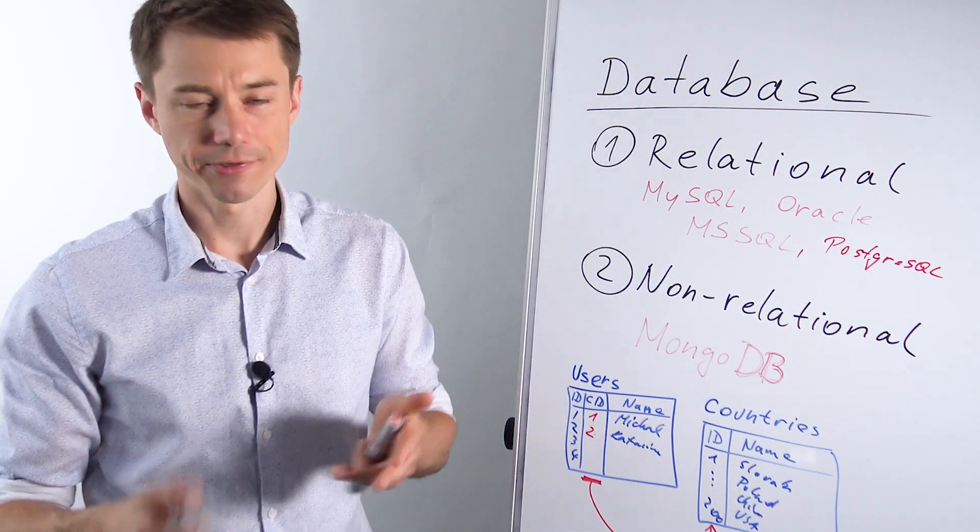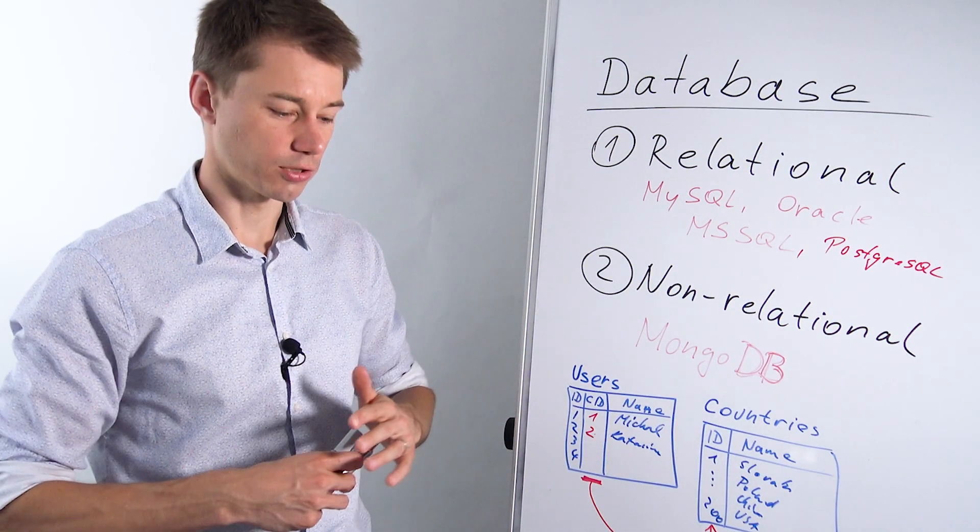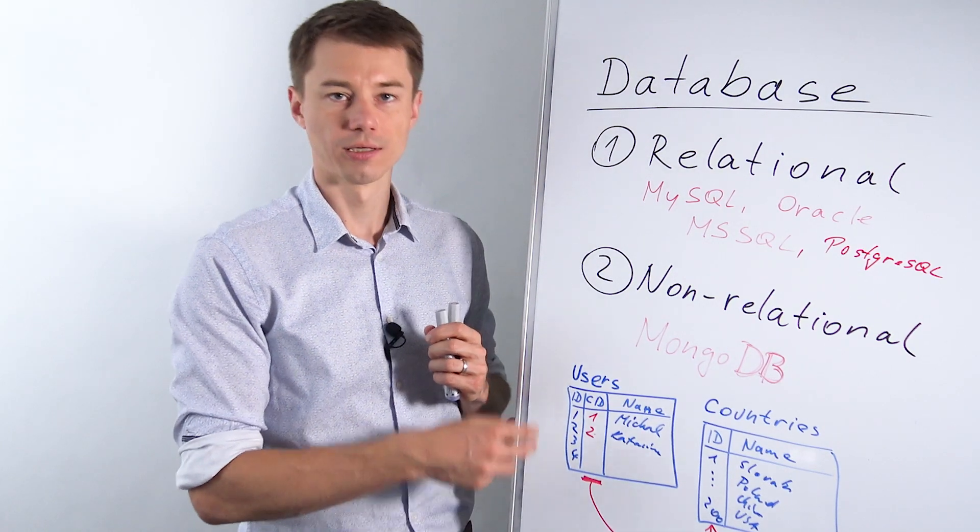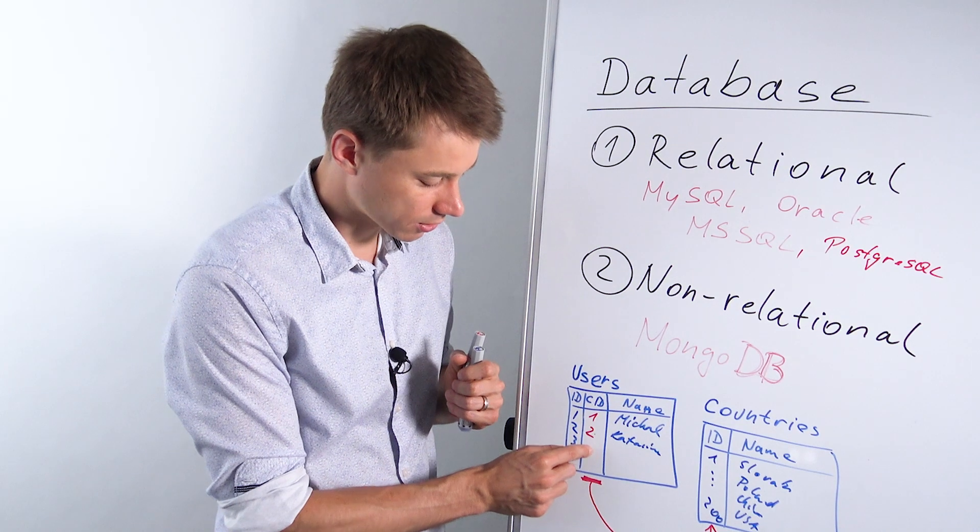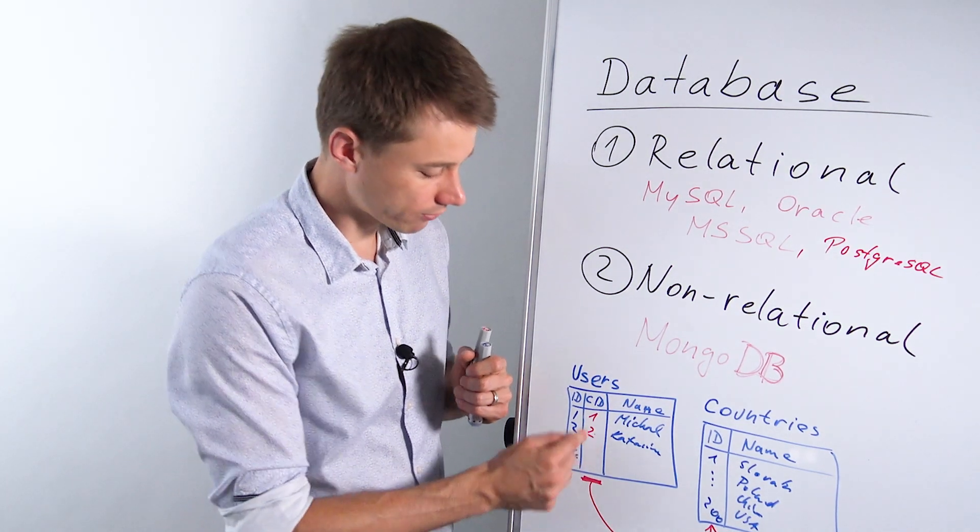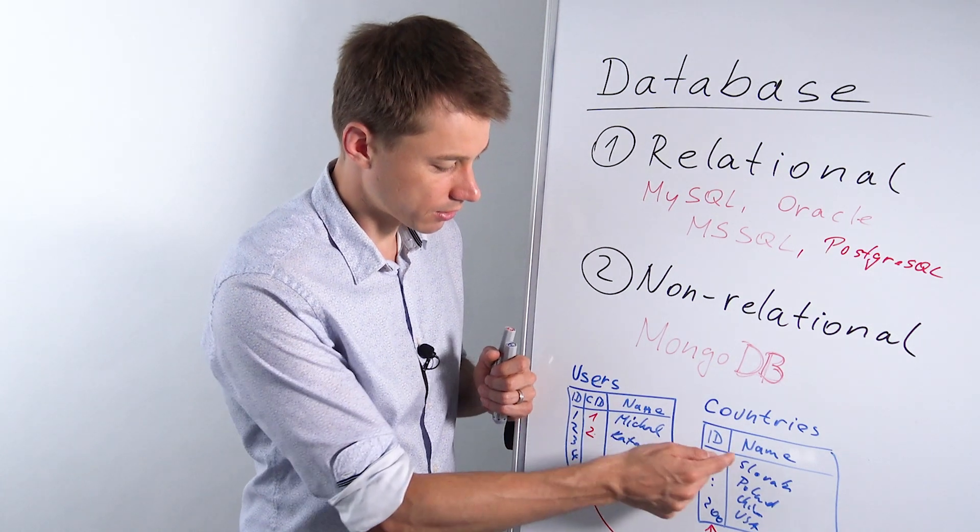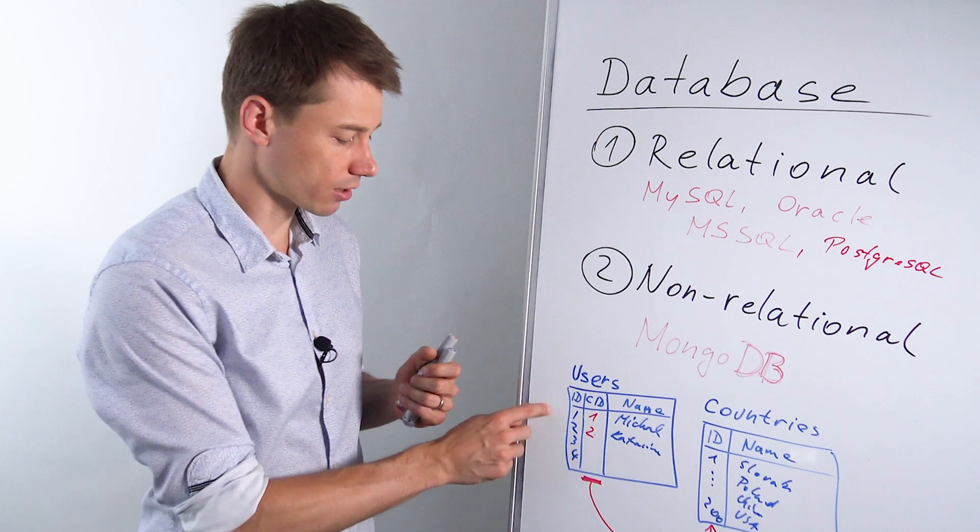So for example what if the country's name changes. And with countries it's not very common but still, what if a country name would change. Then you would need to go through the whole list of users and change it. But if here is just the ID, the country ID, then you just change it once and it changes in the whole database. And not just in the table users.